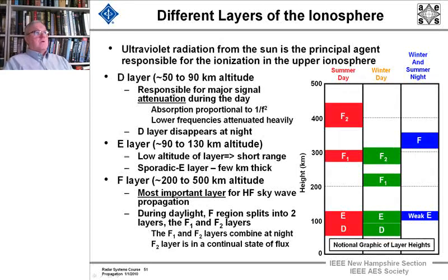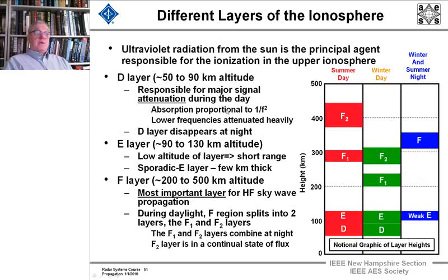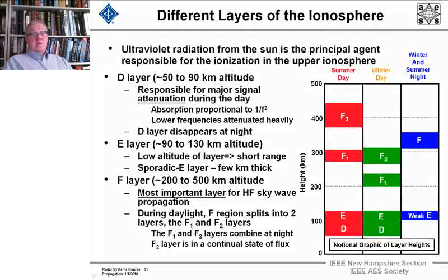Let's go through what makes up these different layers. There's the D layer, which is between 50 and 90 kilometers altitude, and it's responsible for major signal attenuation during the day. Its absorption is proportional to one over frequency squared. Lower frequencies are attenuated heavily when you have a D layer, and that's during the day. The D layer disappears at night, so at night, low frequencies are great for long-distance communication.